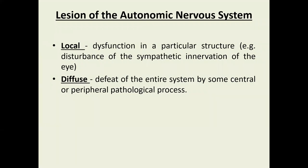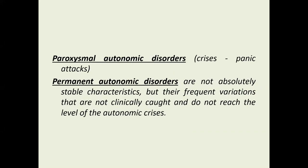When talking about lesions of the autonomic nervous system, we divide them into two main groups: local dysfunction in particular structures — such as disturbance of sympathetic innervation in the eye or another organ — and diffuse, meaning defeat of the entire system by a central or peripheral pathological process. All autonomic nervous system disorders are dynamic — they always change, are always personal, depend on many surrounding factors, and are always unstable.